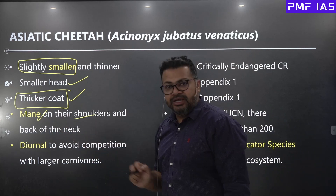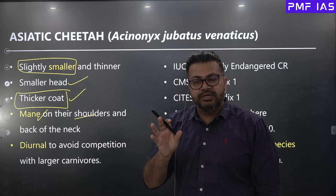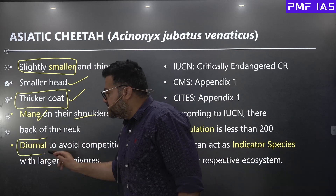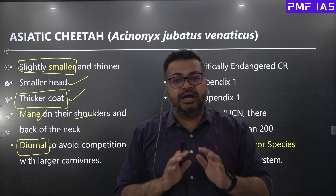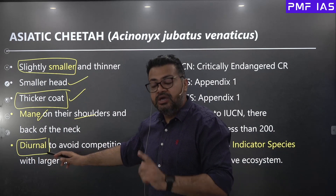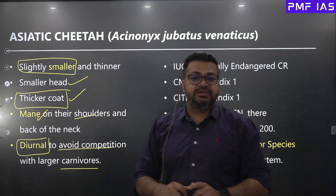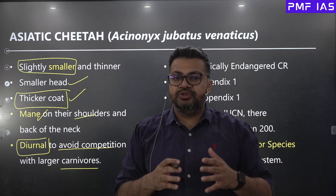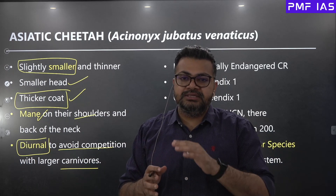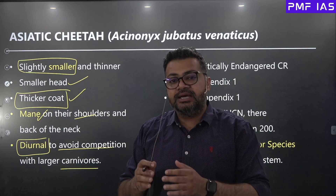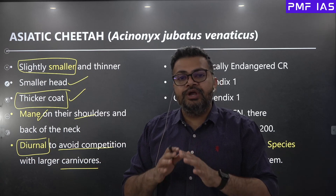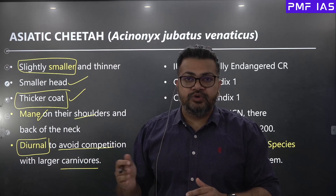The mane is present on the shoulders and the back of the neck and is maintained for a much longer period of their life. They are diurnal in nature — Cheetahs do not hunt at night, they are active only during the daytime. They have developed this diurnal behavior mostly to avoid competition with larger carnivores. In Africa, Cheetahs share the same ecosystem with African lions, so they hunt during the daytime and sleep at night to avoid competition from larger carnivores.